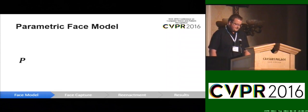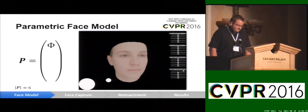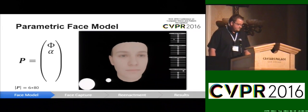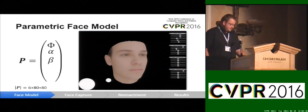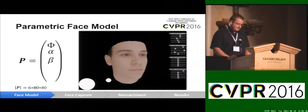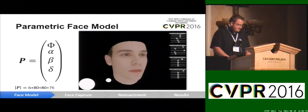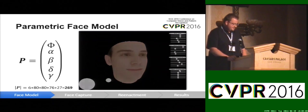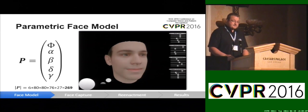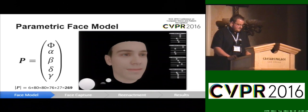When talking about the parametric face model, I'm referring to the parameter vector p. It has six degrees of freedom for the rigid pose of the head. We have another 80 parameters for the shape and 80 parameters for the albedo. These parameters alpha and beta we call identity parameters, and they control the PCA blend shape model. In addition to this PCA model, we use delta blend shape models that add expression to the neutral pose. We also model the illumination using spherical harmonics, using the first three bands resulting in nine coefficients per color channel.